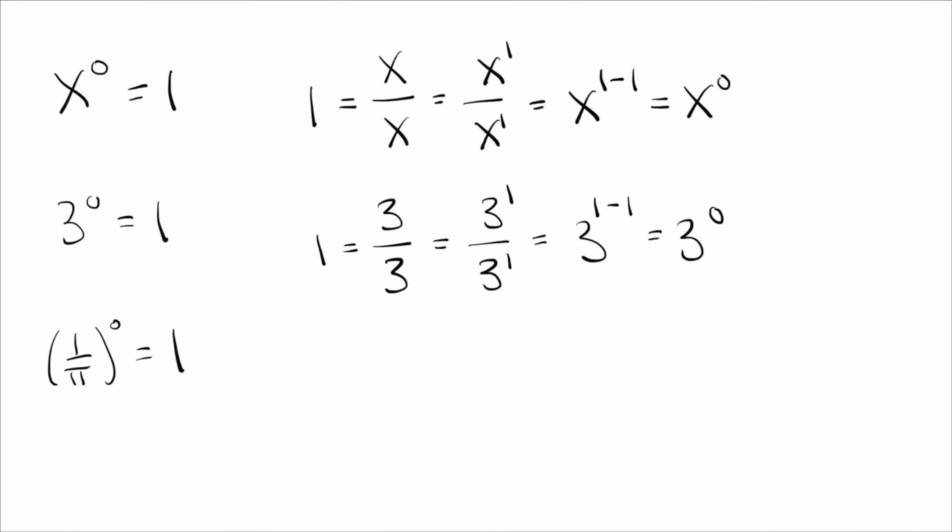Except the one exception to this rule is zero. So zero to the zero does not equal one. In fact, zero to the zero is undefined, which is just a way of saying that we can't say it equals any number. It equals no number. So let's see why that's the case. So we start out the same, we do zero over zero. The problem is you remember from your classes that you cannot divide by zero. So zero over zero not only does not equal one, it doesn't equal any number. It's undefined. So already we're stuck and we can't do the same process. So this is why zero to the zero is not equal to one.